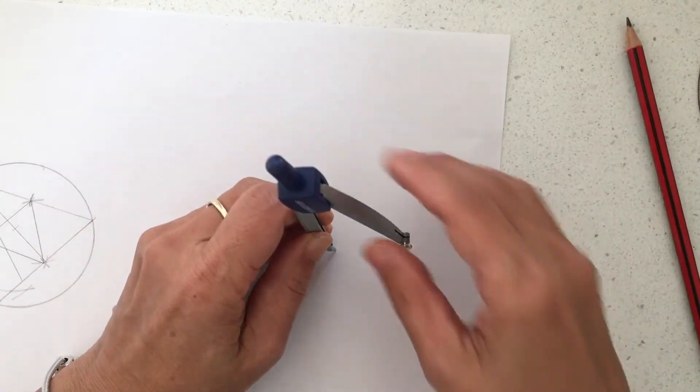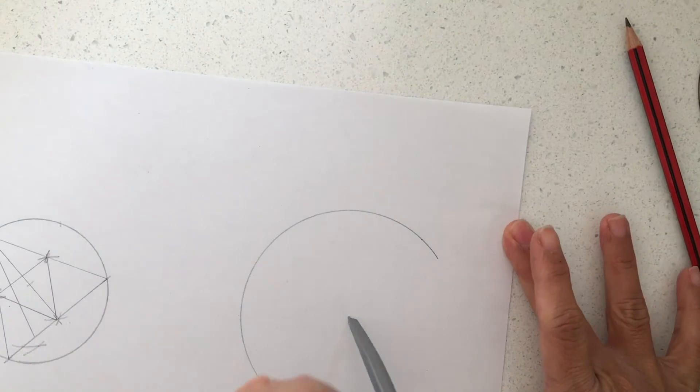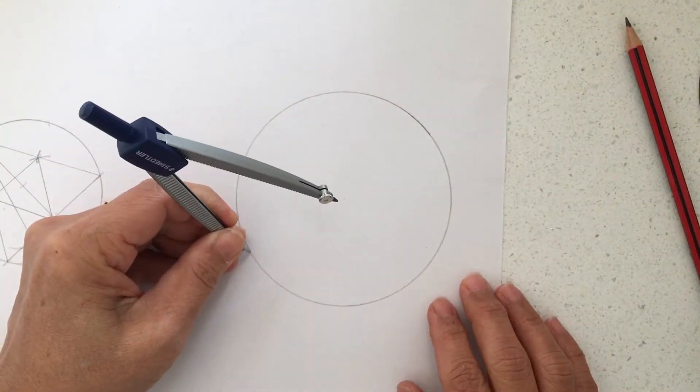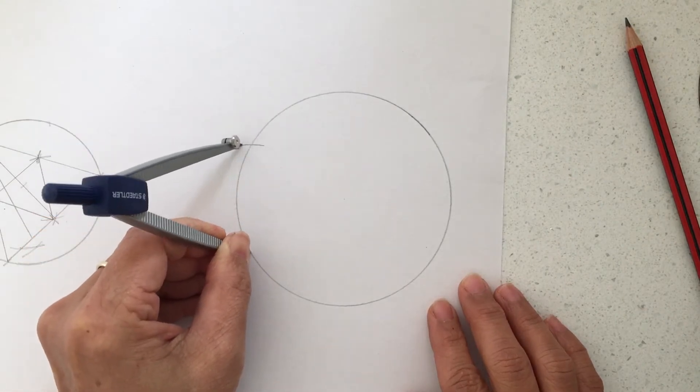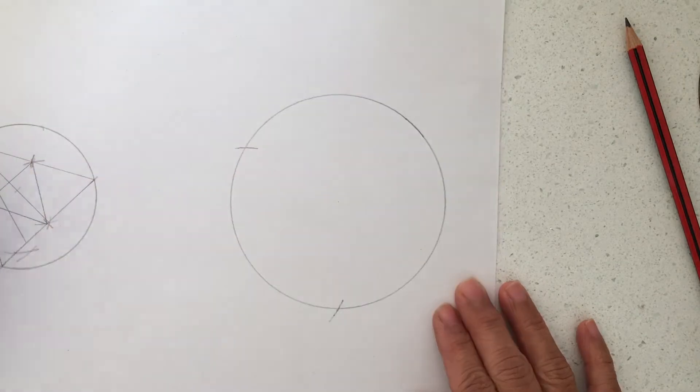Bisecting angles can be used to create very interesting patterns. So you could draw a circle and make an arc, a mark on the circumference, a mark on the other side.